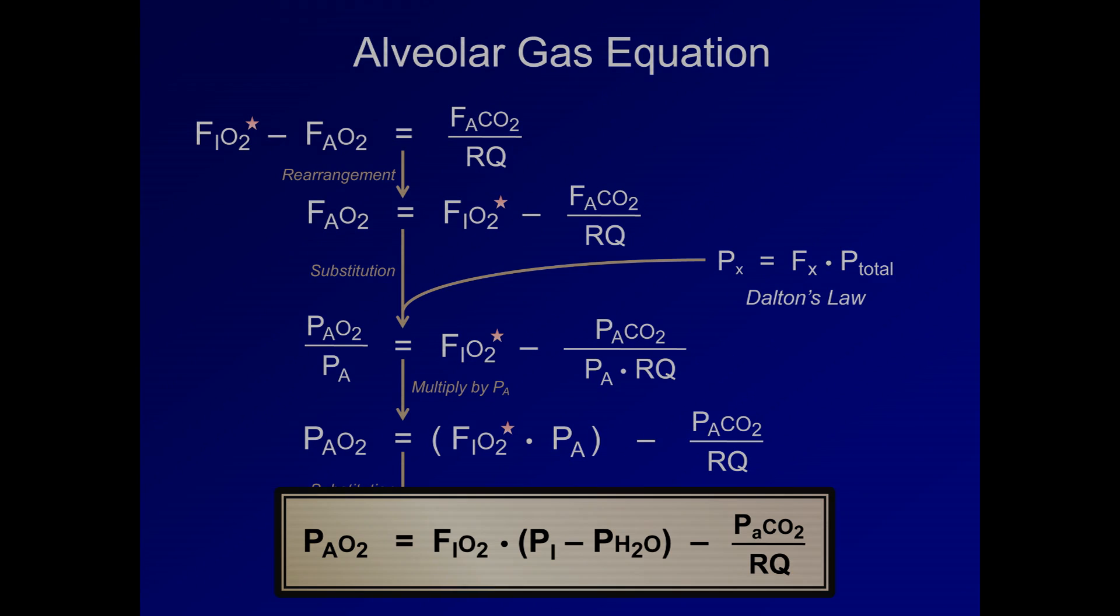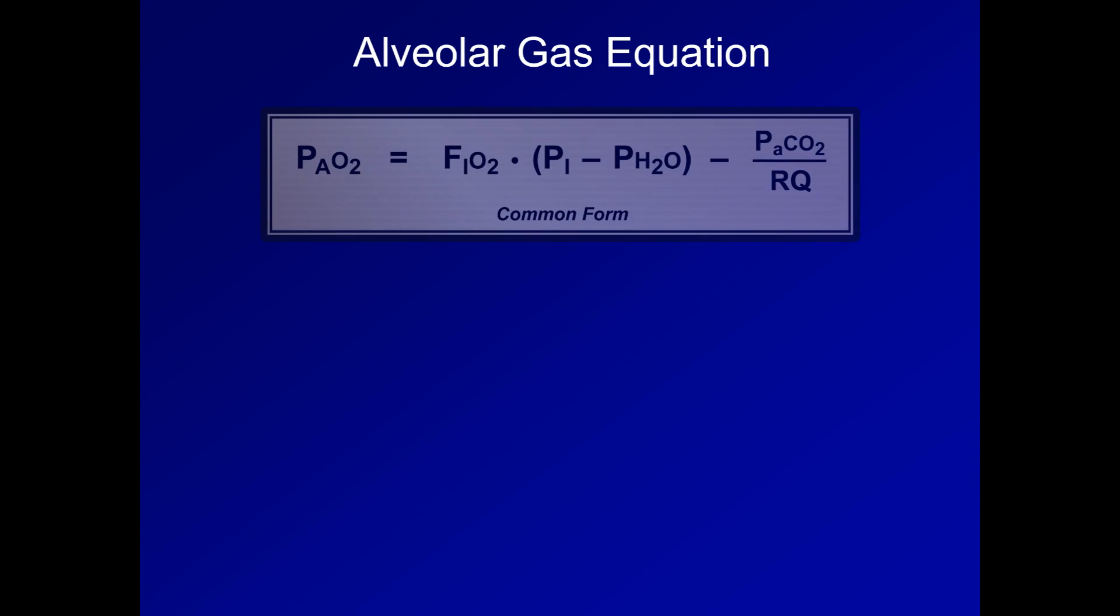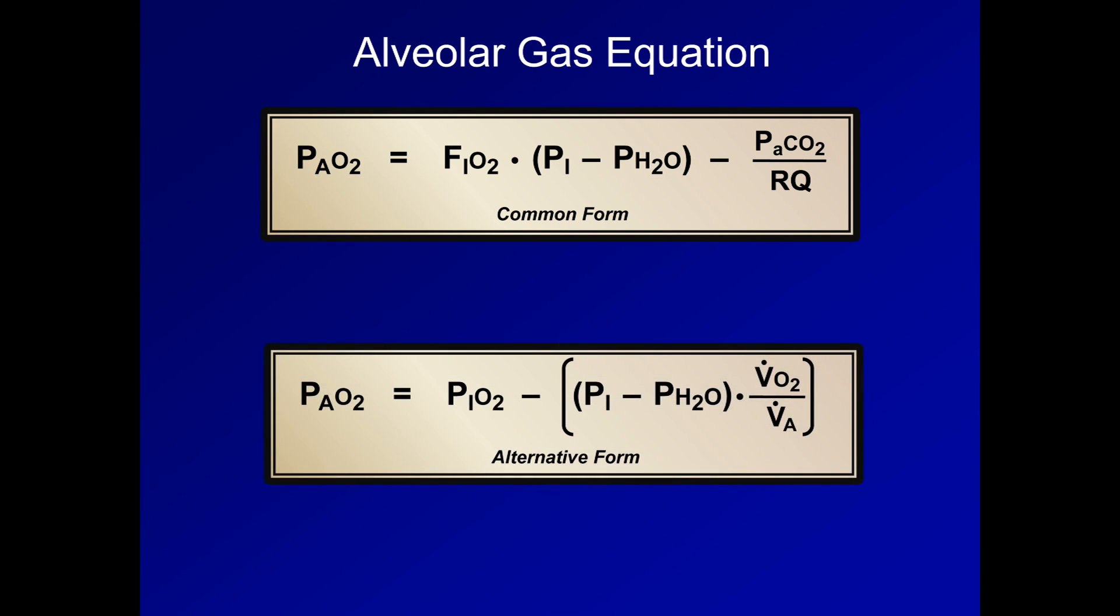I'd like to review two other forms of the alveolar gas equation. First with some algebraic manipulation of the common form, we can restate this equation as the partial pressure of oxygen in the alveoli equals the partial pressure of oxygen in inspired air minus the difference between inspired pressure and water vapor times the ratio of oxygen consumption to overall alveolar ventilation. Although more awkward to use in practice, in this form this actually makes more intuitive sense as one can restate it as the amount of oxygen in alveolar gas is what remains after the oxygen used for metabolism has been removed from the oxygen in inspired gas.